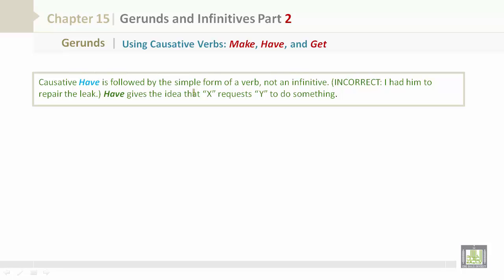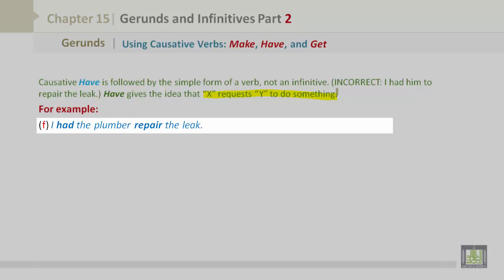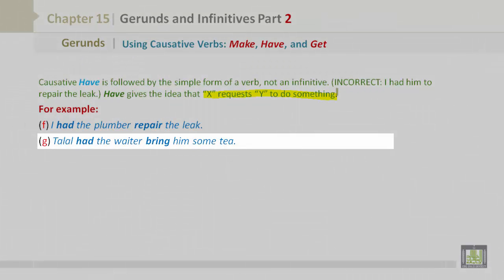Causative have is followed by the simple form of a verb, not an infinitive. Incorrect: I had him to repair the leak. Have gives the idea that X requests Y to do something. For example: I had the plumber repair the leak. Talal had the waiter bring him some tea.